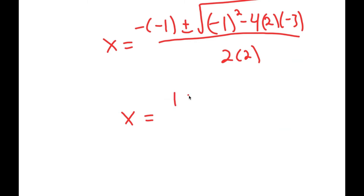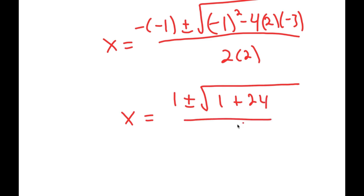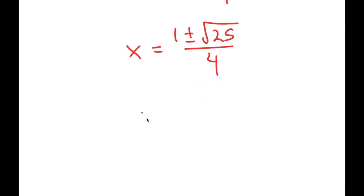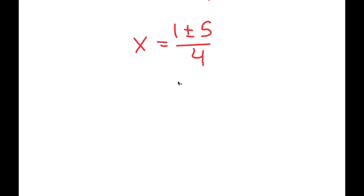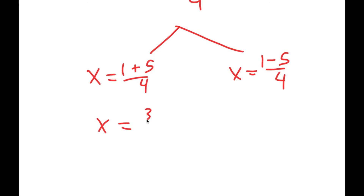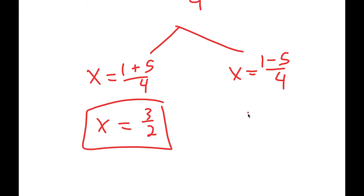This simplifies to 1 plus or minus the square root of 1 plus 24 over 4, which equals 1 plus or minus 5 over 4. This gives two solutions: x equals 1 plus 5 over 4, which is x equals 3 over 2, and x equals 1 minus 5 over 4, which gives x equals negative 4 over 4, or negative 1.